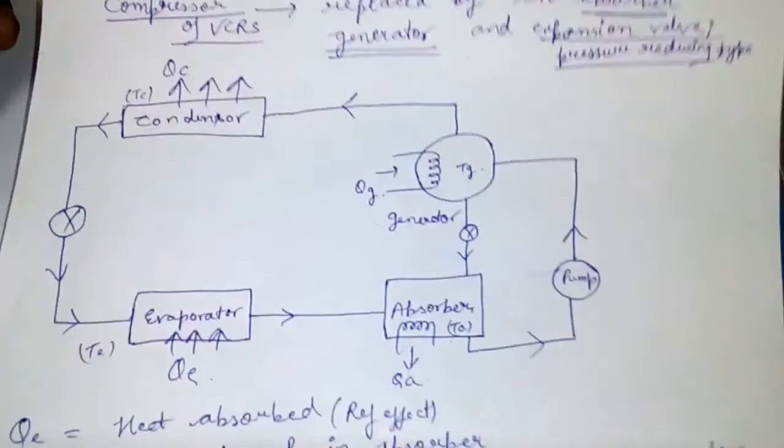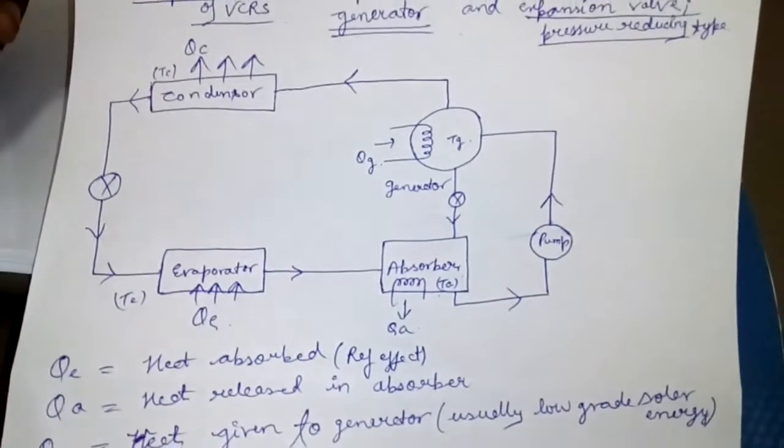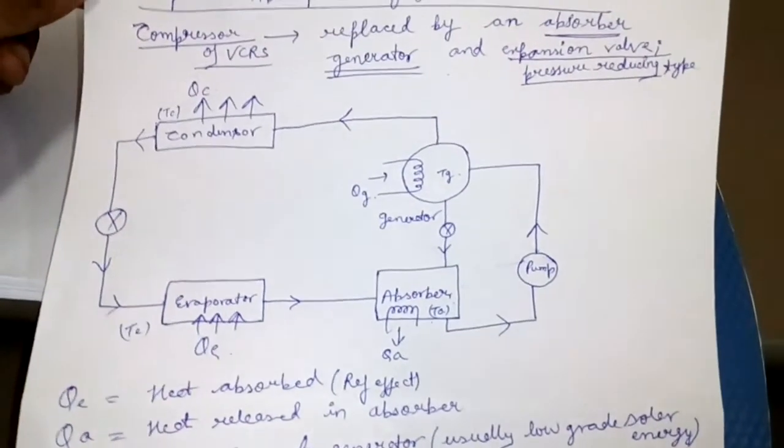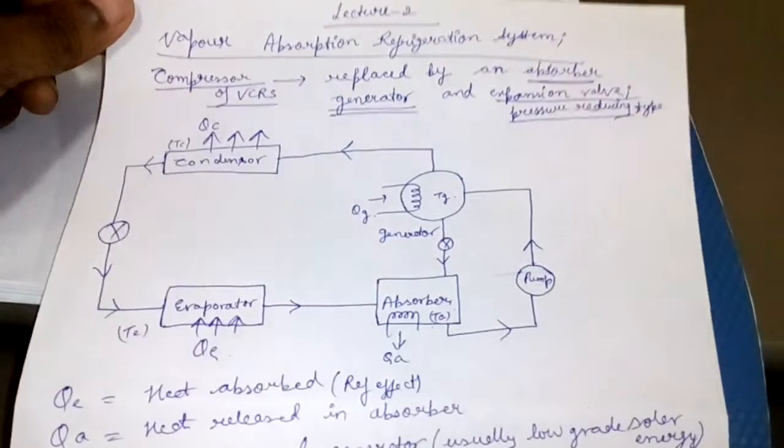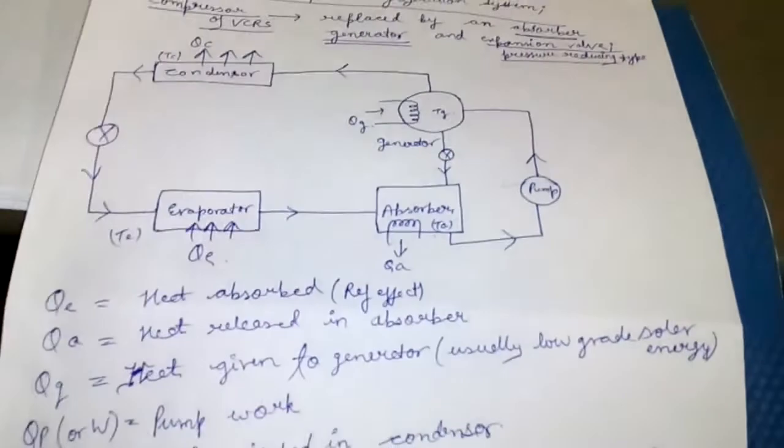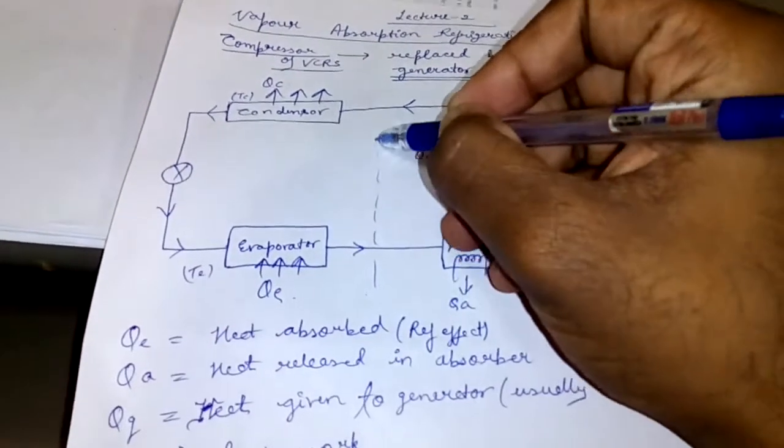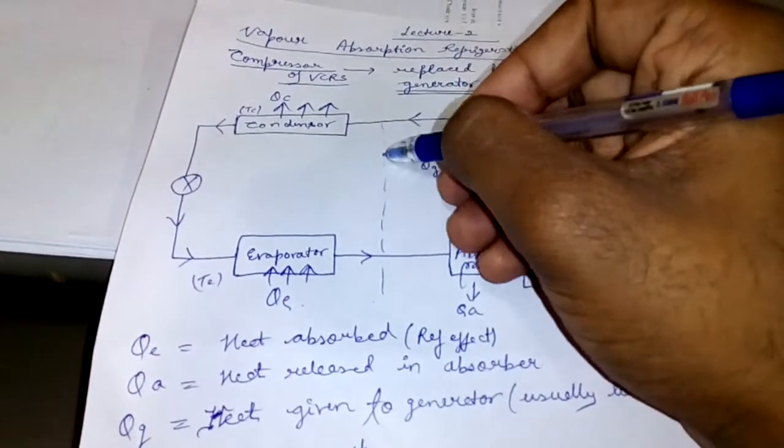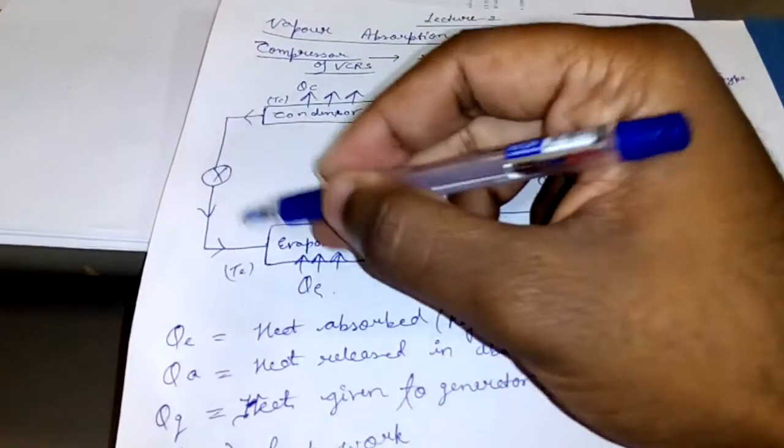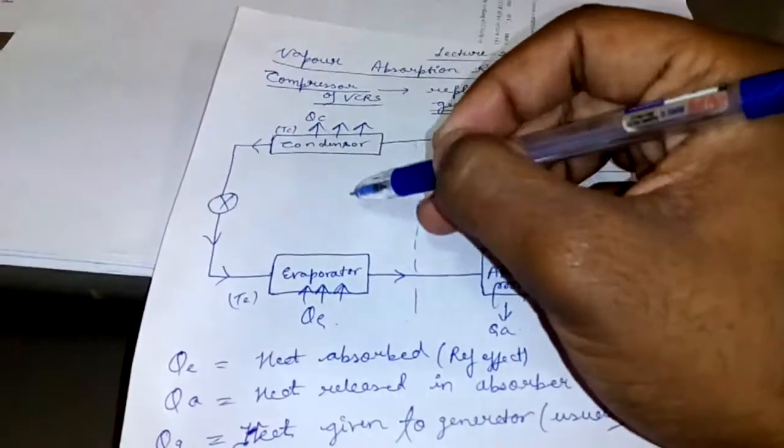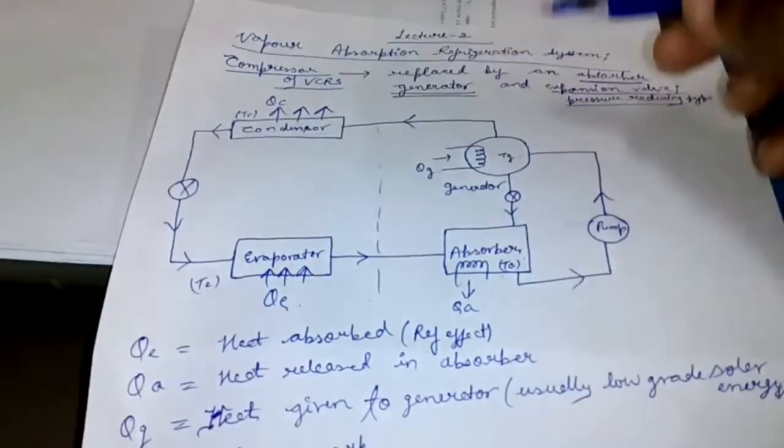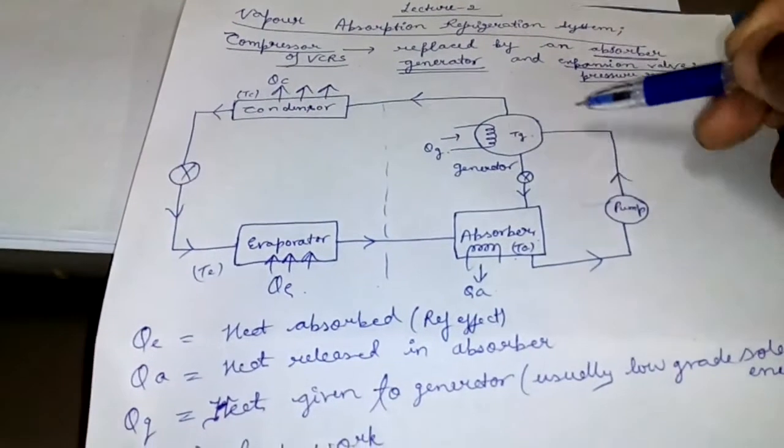This is the basic circuit diagram of Vapor Absorption Refrigeration System in which this portion, from here to here, these three components remain the same from VCRS cycle and this is the modification.